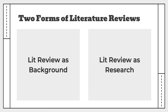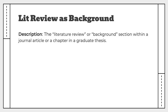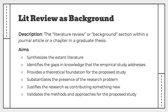Now, somewhat confusingly, literature reviews come in two forms: literature reviews as background and literature reviews as research. A literature review as background is what most of us commonly think of when we think of a literature review — it's a review or background section in a larger piece of writing, such as a journal article or a dissertation. Some of the aims include synthesizing existing literature, identifying gaps in knowledge, providing a theoretical foundation, substantiating the presence of a research problem, justifying the research as contributing something new, and validating the methods and approaches for the proposed study.